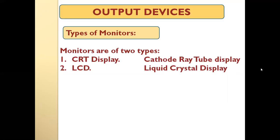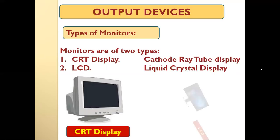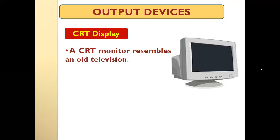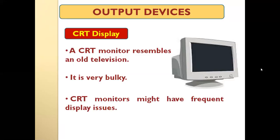The first type is the CRT display — CRT stands for cathode ray tube. The second is the LCD, or liquid crystal display. On the left we have a CRT display, and on the right is an LCD. A CRT monitor resembles an old television and is very bulky compared to today's LCDs. CRT monitors also had frequent display issues, and their image resolution was not very high, resulting in poor image quality compared to modern monitors.